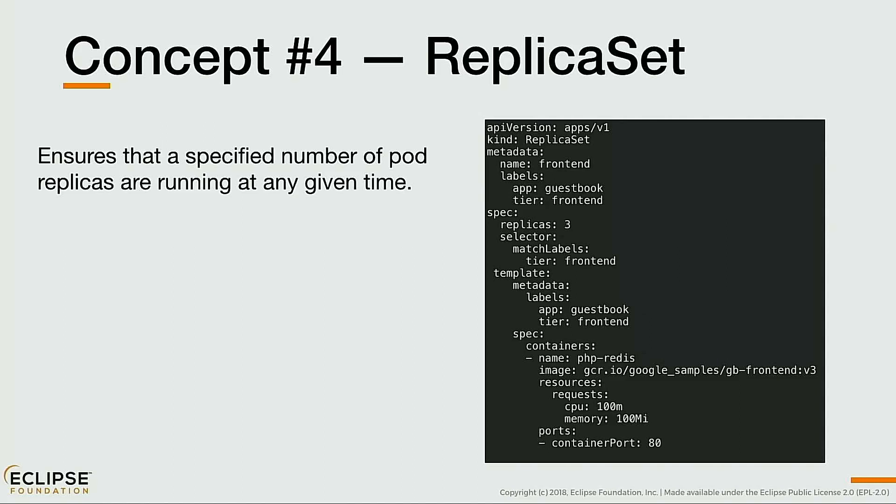ReplicaSet is a concept that sits just above pods. A pod by itself only runs as a single instance. If you want several replicas of a pod, you need a ReplicaSet, and the control plane will schedule all replicas across the nodes. It ensures that at any given time it tries to meet the replica number you've specified. ReplicaSet uses labels: it says it manages any pod matching a given label, will create pods using a template, and any pod it creates will have those labels — that's how it links the replica metadata to the pods it actually creates.